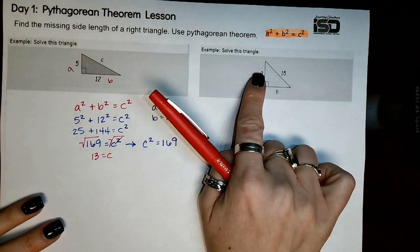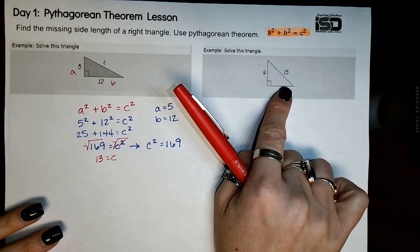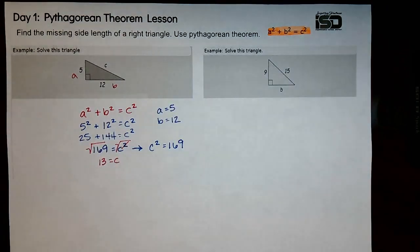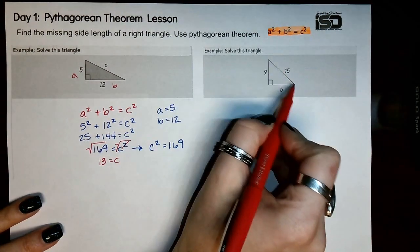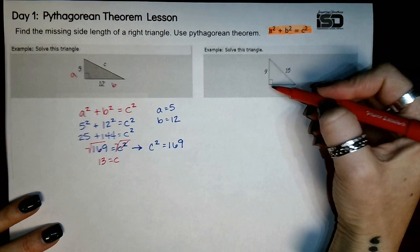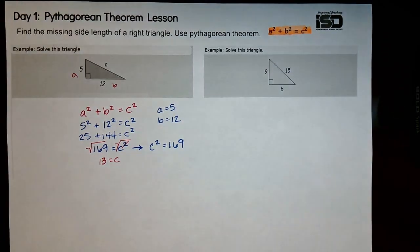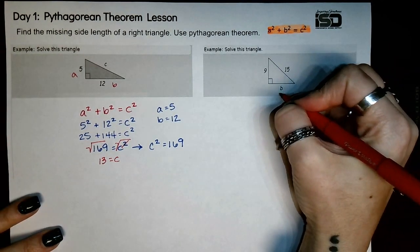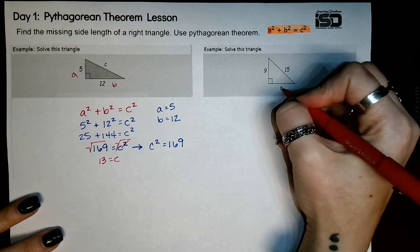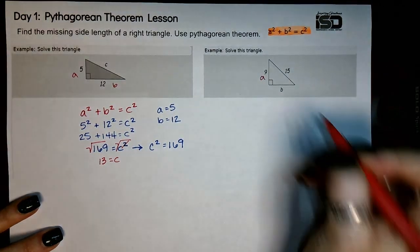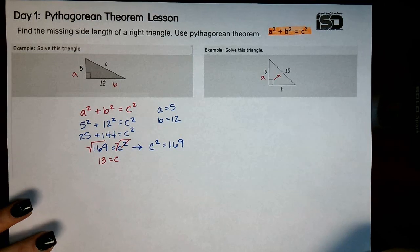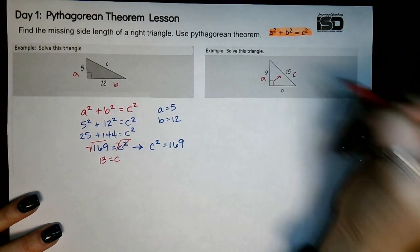Now notice over here, it's still a right triangle, which is what Pythagorean theorem deals with. However, in this situation, you know the hypotenuse, but you only know one of the legs. In this situation, it tells us this is our missing side, which is our b, which makes this one a, and then since it's across the right angle, this is going to be our c.